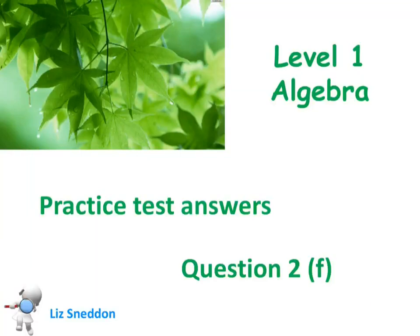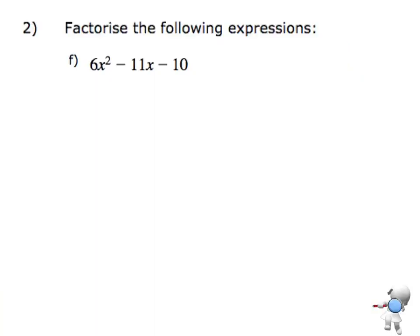Here's the answer to question 2f. So we want to factorize this expression here. It's a quadratic term, we've got our x squared in there. And so this is now where the coefficient of x squared is not 1. So that means the process that we go through is a little bit longer now.